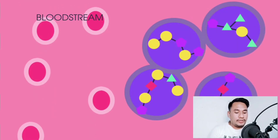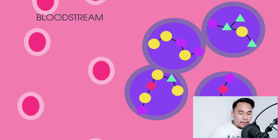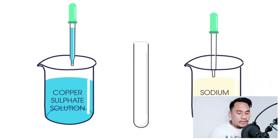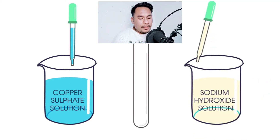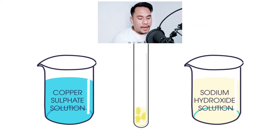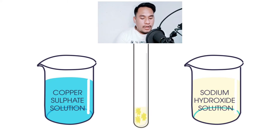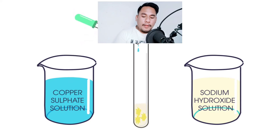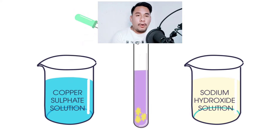To test for protein, you need to use copper sulfate and sodium hydroxide solution. To begin the experiment, make a solution of a food sample by dissolving it in water. Add a few drops of sodium hydroxide solution, then add copper sulfate solution. If the solution turns lilac or purple, the food contains protein. If it remains blue, no protein is present.